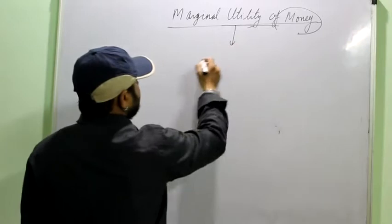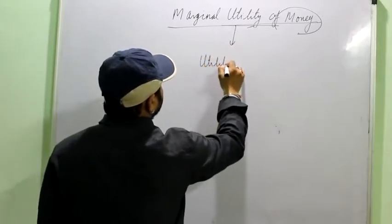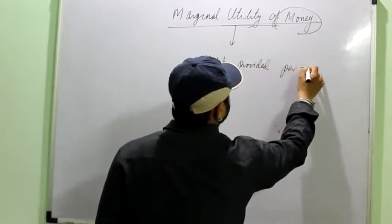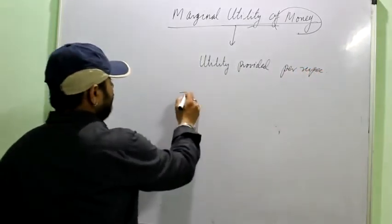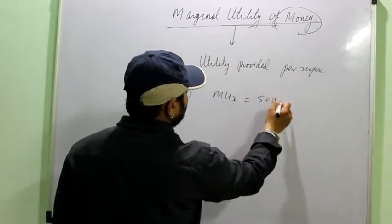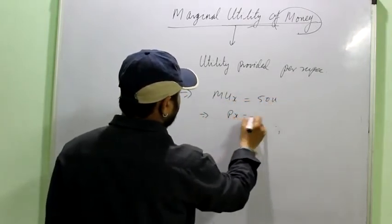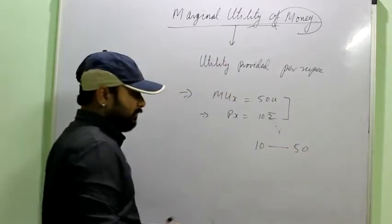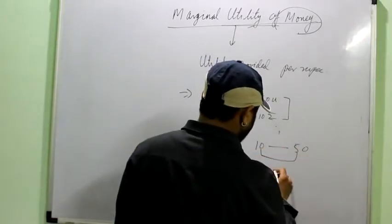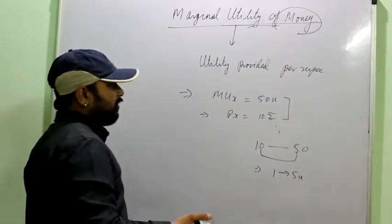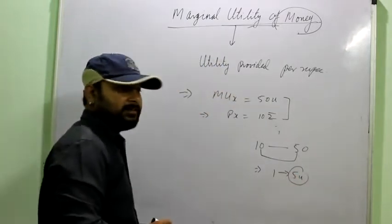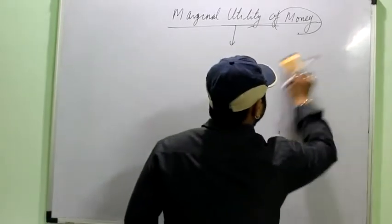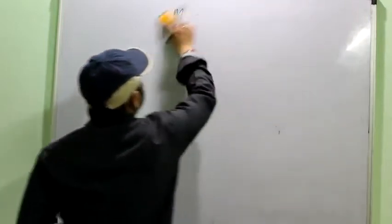It resembles the utility provided by per rupee. Like for example, you say the marginal utility of a commodity is say 50 utils and the price of that particular commodity is say 10 rupees. So spending 10 rupees is giving you utility of 50 utils. So its marginal utility of money means that 1 rupee is giving you utility of 5 utils, or marginal utility of money is 5 utils per rupee. You always have to remember this particular concept because this is very important to understand the consumer's equilibrium.